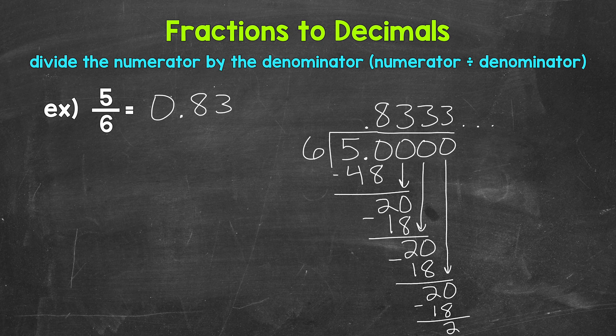We put a bar above the three to show that that digit repeats. So five sixths equals 0.83 with the three repeating.